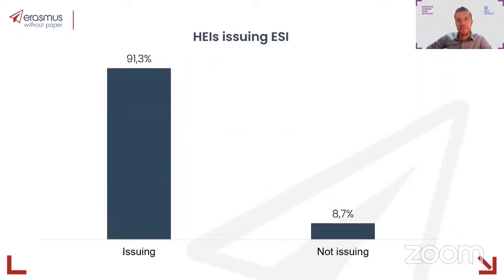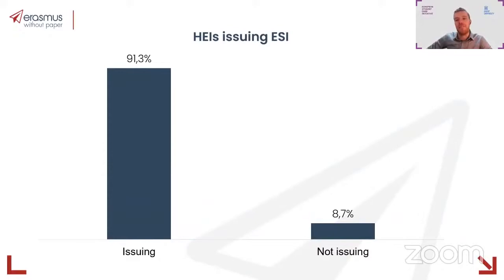It's also worth mentioning that more than 90% of higher education institutions are already issuing a European Student Identifier. This is a huge achievement from the community — it is of course you who made all the efforts to get connected and start exchanges. From the assessment report, it is very important to understand where we are from this perspective.